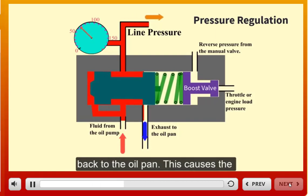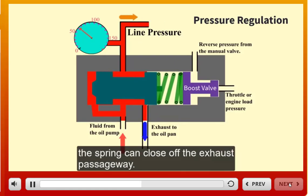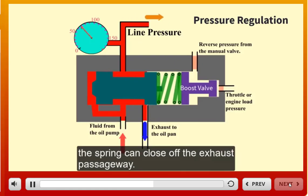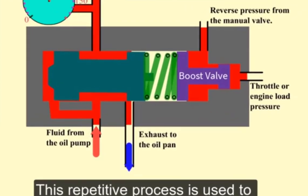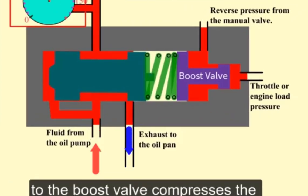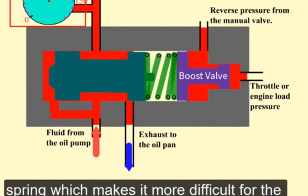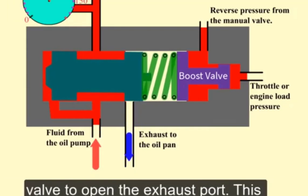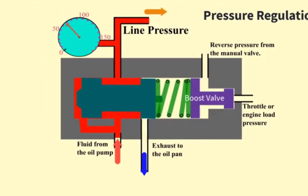This causes the pressure to drop slightly. When this happens, the spring can close off the exhaust passageway. This repetitive process is used to regulate line pressure. Adding pressure to the boost valve compresses the spring, which makes it more difficult for the valve to open the exhaust port. This causes the line pressure to increase.